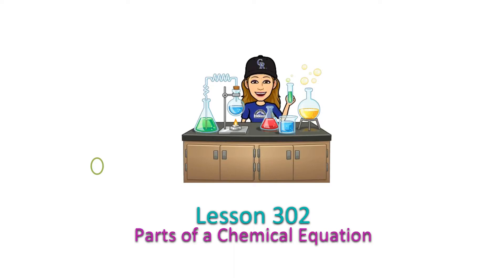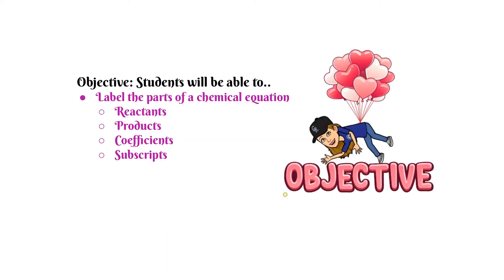Hi everyone, it's Mrs. Sommer here to talk about lesson 302, Parts of a Chemical Equation. In this lesson, students will be able to label the parts of a chemical equation: the reactants, products, coefficients, and subscripts.